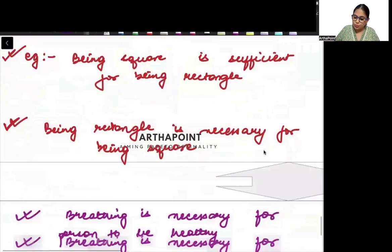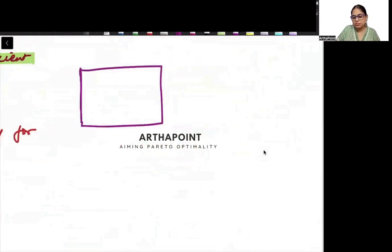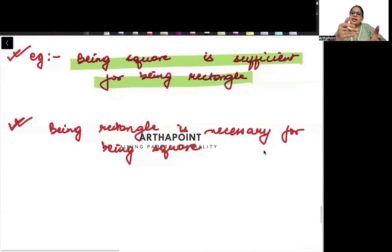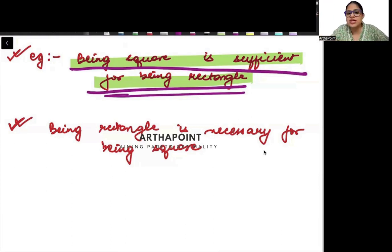Ek aur example lete hai. Suppose I tell you, being square is sufficient for rectangle. Agar meinne kisi ko square hi dekh liya, matlab 4 sides equal dekh li, toh yeh proof hoga ki iski 4 sides hai. If it has 4 sides, it is automatically a rectangle. Toh square hona kaafi hai rectangle hone ke liye. Being square is enough for being a rectangle. It is sufficient. Agar kuch square hai, if something is a square, it will have 4 sides. Equal sides. Aur agar 4 sides hai, if it has 4 sides, toh wo rectangle bhi hoga, it will be a rectangle. So being square is sufficient. Square hona kaafi hai, rectangle hone ke liye.